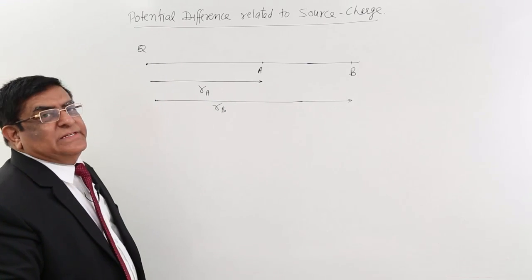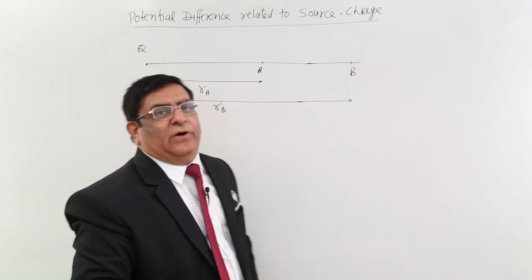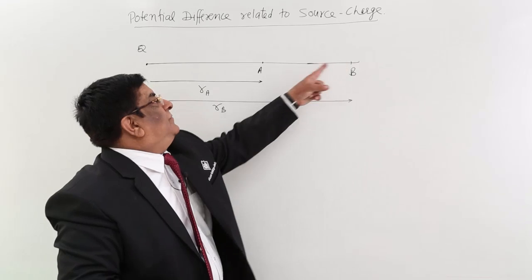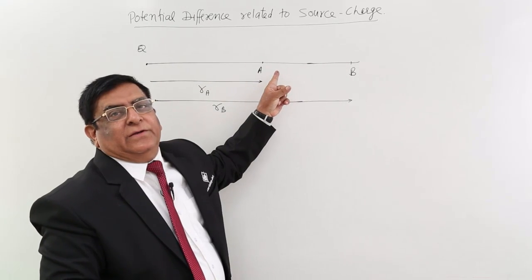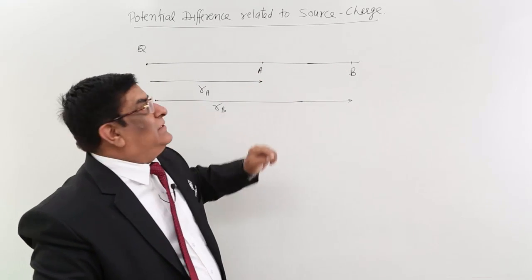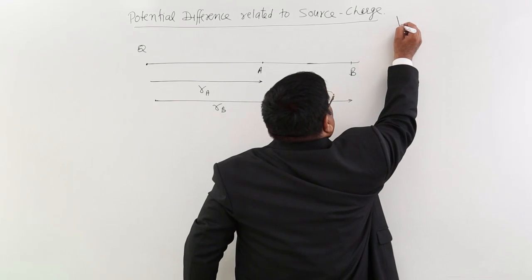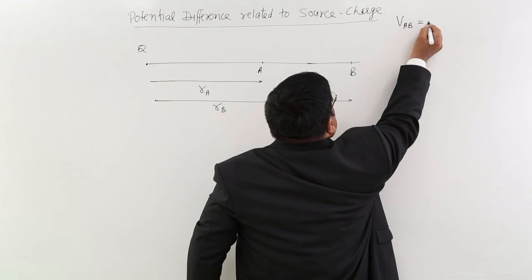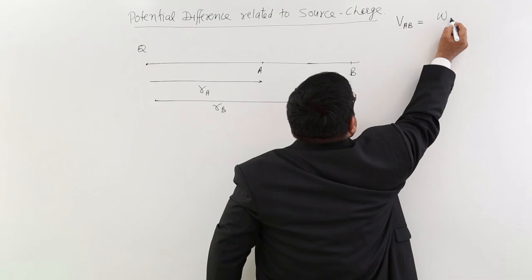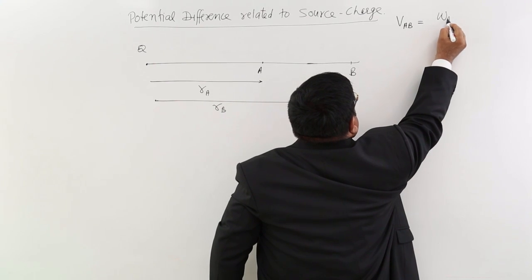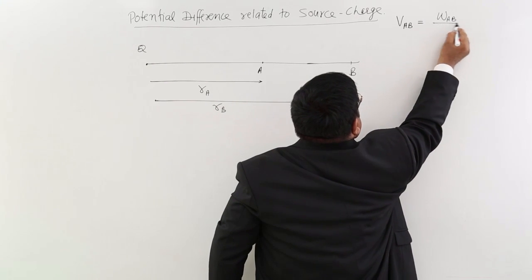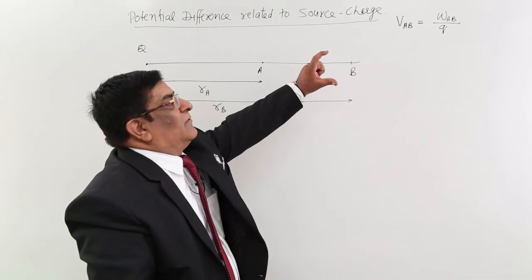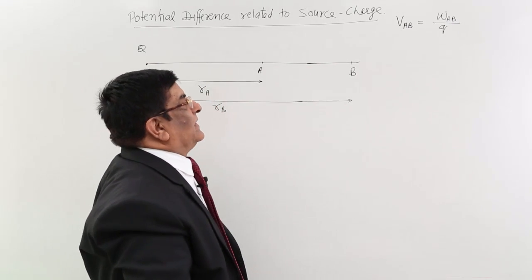I know the basic formula. The basic formula for potential difference is: whatever work I have to do going from B to A. So if I find that, then I will know the potential difference from A to B, which will be equal to work done from B to A divided by charge. This is my fundamental formula on which I will be working.